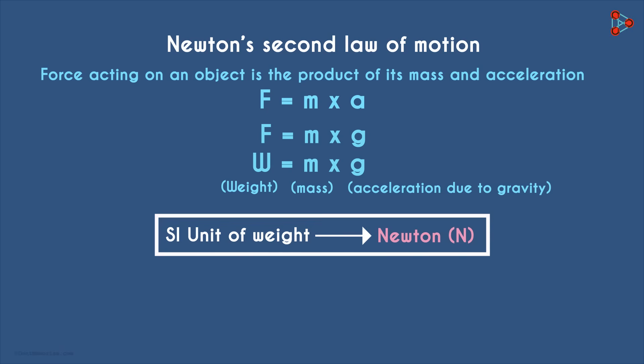As the value of g at a particular place is constant, we can also say that the weight of the object is directly proportional to its mass.